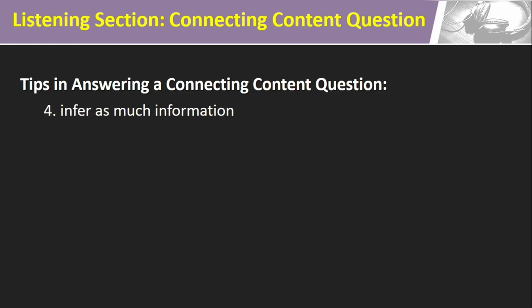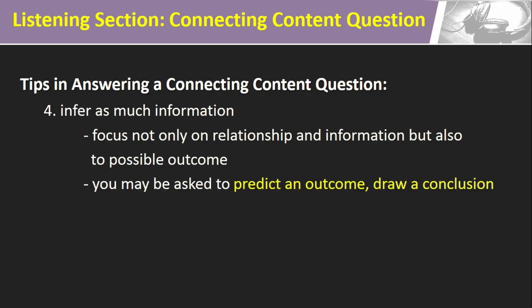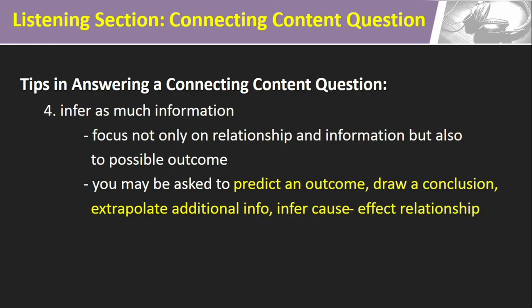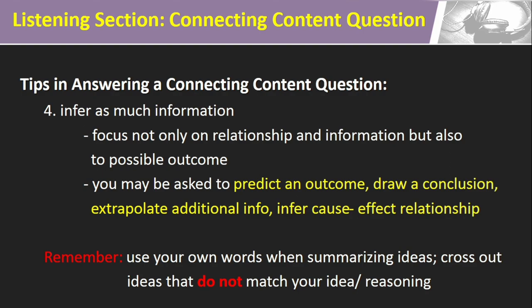For the last strategy, try to infer as much information as possible based on the relationships mentioned in the passage. Focus not only on the relationships and information given, but also on the possible outcome of future actions. The question may require you to predict an outcome, draw a conclusion, extrapolate additional information, or infer a cause-effect relationship. It is always wise to be prepared for these situations. Rely on the notes you have on paper, and use your own words when summing up ideas — that way it would be easier to come up with more logical reasoning. Before choosing an answer, make use of the process of elimination: cross out answer choices that do not match your reasoning.